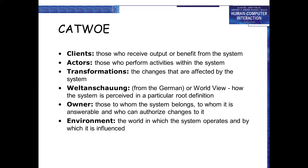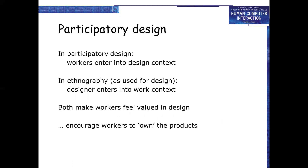Continuing CATWOE: Weltanschauung (world view) — how the system is perceived in a particular root definition; Owner — those to whom the system belongs, to whom it is answerable, and who can authorize change to it; Environment — the world in which the system operates and by which it is influenced.